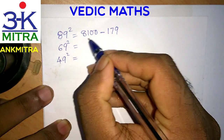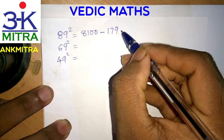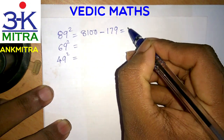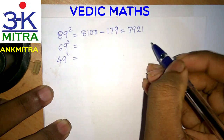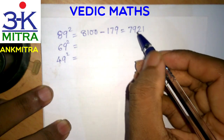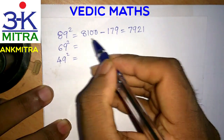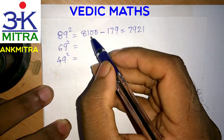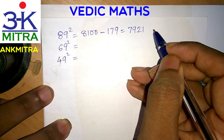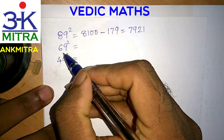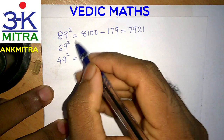To get the perfect square of 89. The answer is 7921 — so 7921 is the perfect square of 89. Isn't it very easy? With a little practice, we can do this in a matter of just three or four seconds. Now let's look at the square of 69, this being one short of 70.